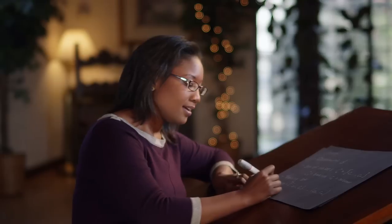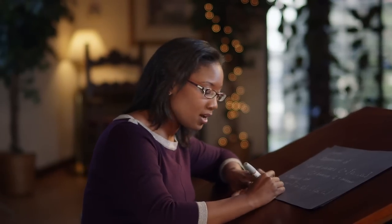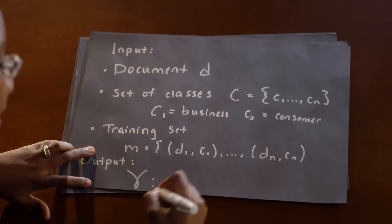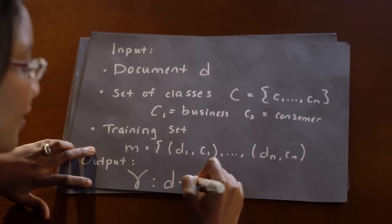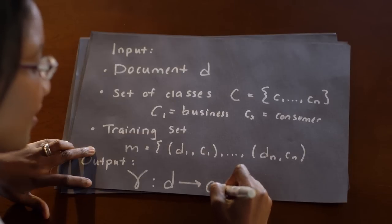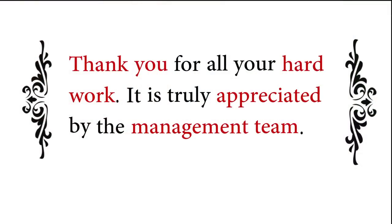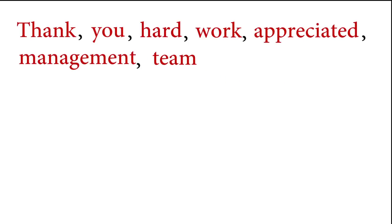Our output is a trained classifier, which we'll call Gamma. Gamma is going to take a document, look at it, and then give us its suggested class C sub K. Our classifier Gamma is going to work like this: we're going to take the text from a particular message and classify it. Only certain words in that message are really going to be important — those are the words that appeared in our training set of data. We're going to take the words that are most important and eliminate the others. These words become our bag of words, and that's what our classifier is going to use in order to make a decision.